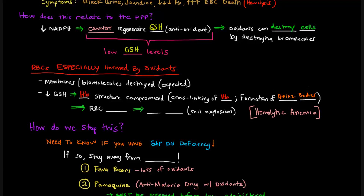What happens is that the red blood cells get deformed — we have a red blood cell deformity — and this is followed by cell lysis, basically a cell explosion. This is what we call hemolytic anemia. 'Hemo' refers to blood, and 'lytic' refers to lysis or cell explosion. Anemia is when you have too few red blood cells or too little hemoglobin. Hemolytic anemia is the term associated with what happens here, and that's what actually kills these patients.